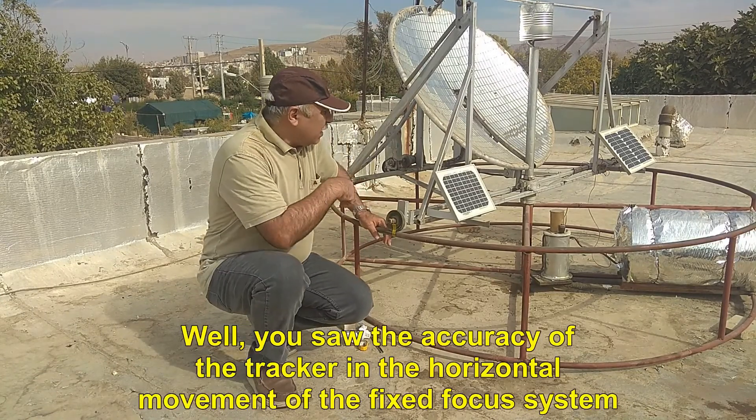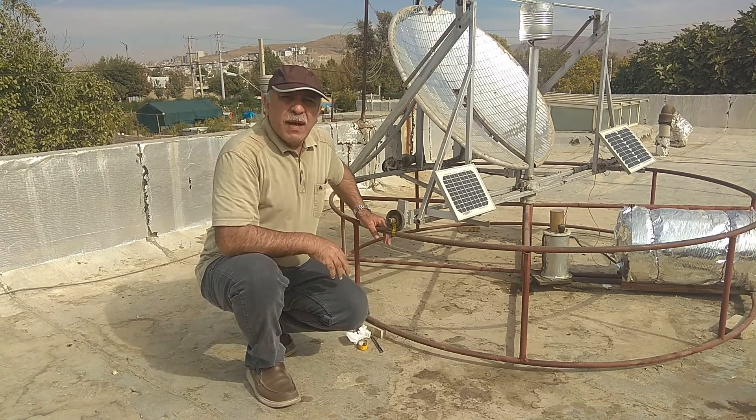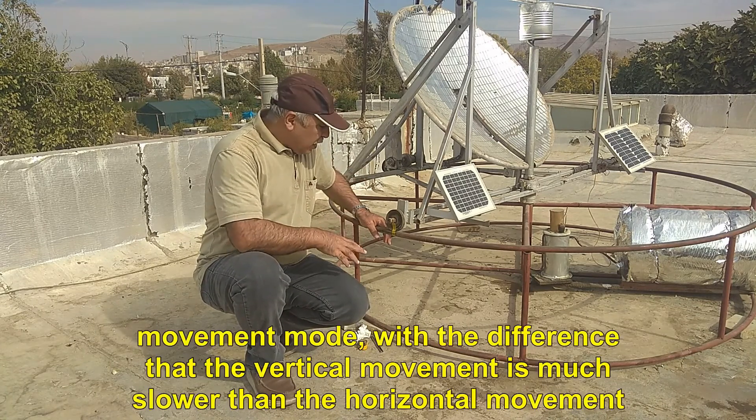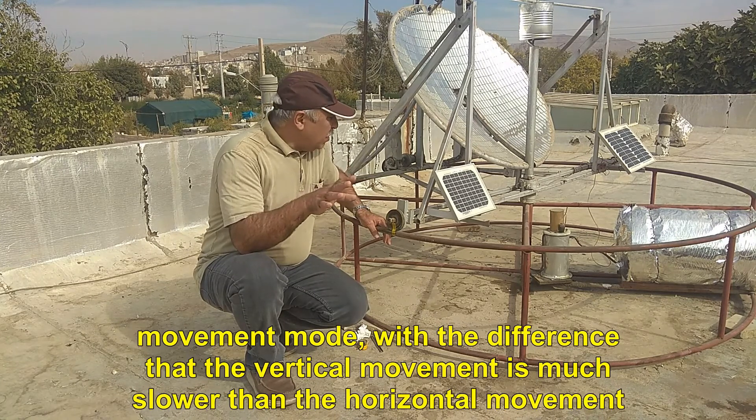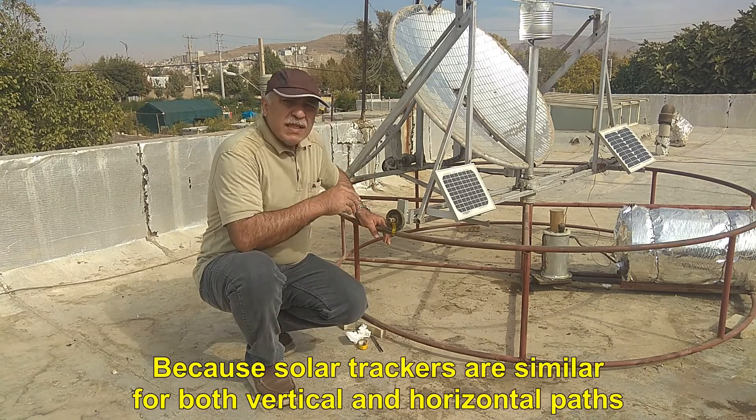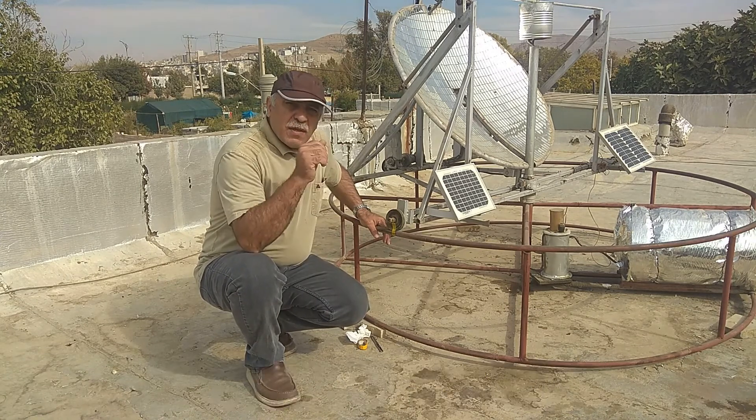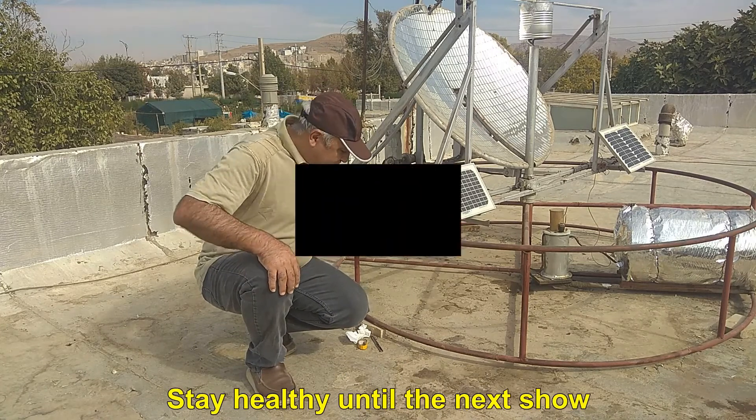Well, you saw the accuracy of the tracker in the horizontal movement of the fixed focus system. Of course, the same accuracy is maintained in the vertical movement mode, with the difference that the vertical movement is much slower than the horizontal movement, because solar trackers are similar for both vertical and horizontal paths. I hope that you are satisfied with the program. Stay healthy until the next show.